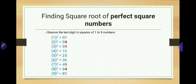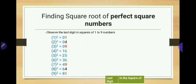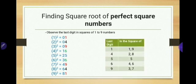Let us first observe the last digits in the squares of 1 to 9. Square of 1 is 1, square of 2 is 4, square of 3 is 9, square of 4 is 16, square of 5 is 25, square of 6 is 36, square of 7 is 49, square of 8 is 64, square of 9 is 81. Observe the last digits: 1 is the last digit in squares of 1 as well as 9.